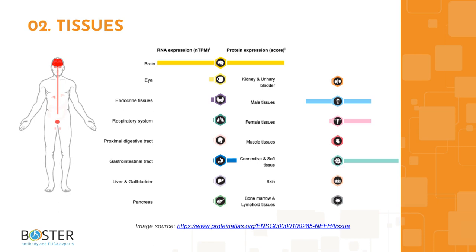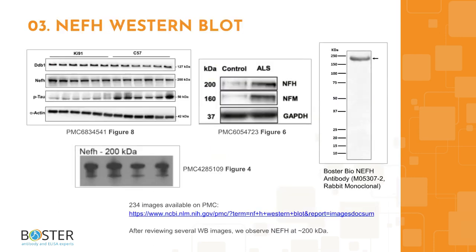This information will come in handy when designing positive and negative controls for western blot and immunohistochemistry. Topic 3: NEFH in Western Blotting. Antibody specificity can make or break an experiment. After looking through western blot images from publications and antibody companies, we can see that the band for NEFH runs at around 200 kilodaltons. Check out the PMC link for more images, which is also provided in the description box.